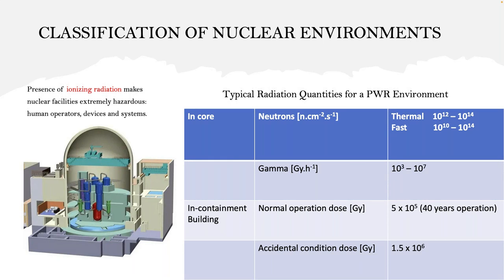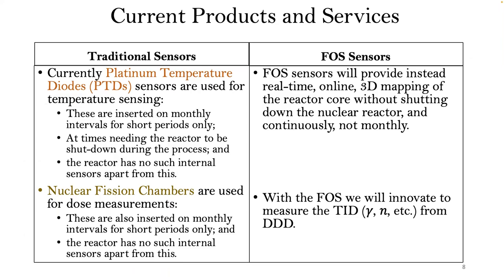Hence, we want to apply the fibers. Even outside the core in the containment building, the environment is still very harsh. Normal operation dose there can pick up to about 10^5 over a period of 40 years of operation. Under accidental conditions, your dose can pick up to the megagray range, which is quite deadly for electronic components. So the question is: what do we currently have in the nuclear reactors compared to what we want to provide with fiber optic sensors?